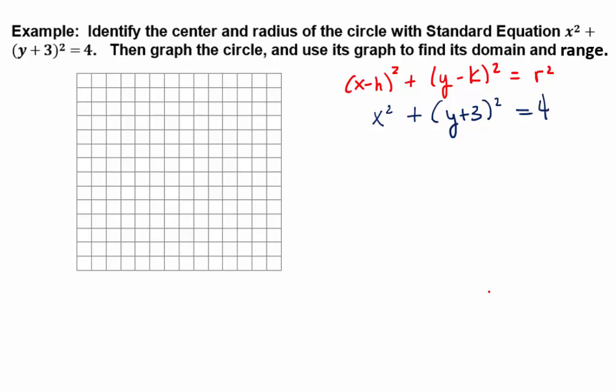So what I mean by that is, for example, we have x² here and we don't have (x - something)². So how could we write that as (x - something)²? x - 0, perfect. x² is really (x-0)². So that fits the pattern a little bit better.